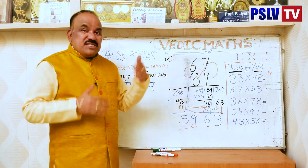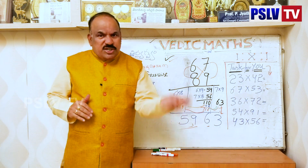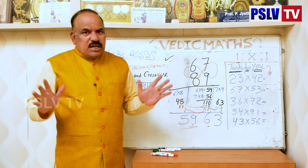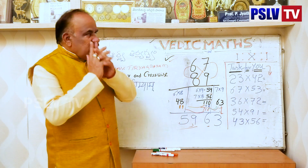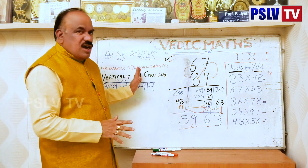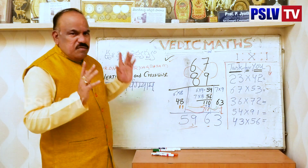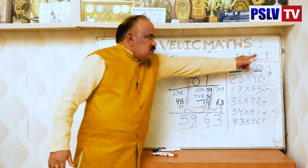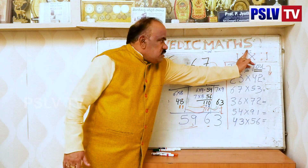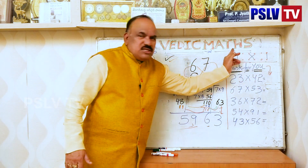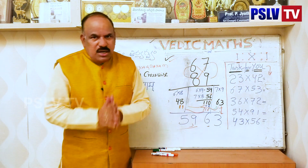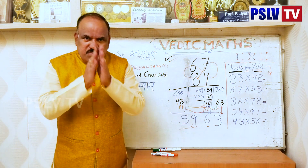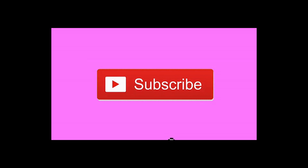I will teach you how to multiply 3 digits into 3 digits. Basically, remember: crossways and vertical. The pattern is: I, then cross, then I. Thank you very much for watching.